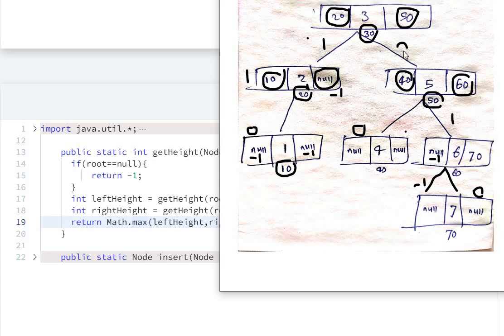So 50's right side has height 1 and left side has height 0. Maximum of these two is 1, so 1 plus 1 equals 2. So here 2 comes. At 3's right, the height is 2 and left is 1. Maximum of these two is 2.